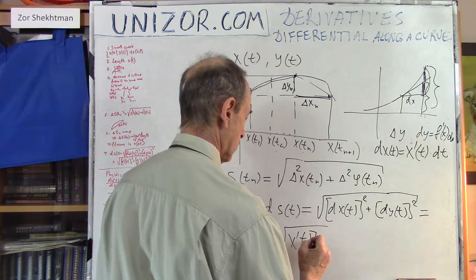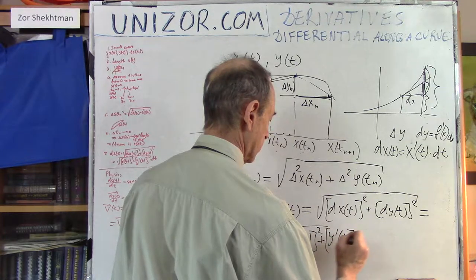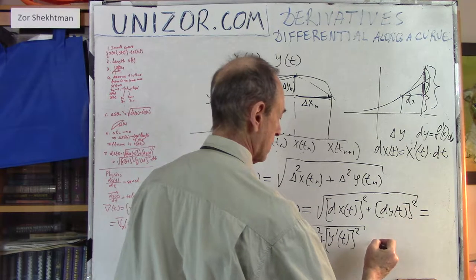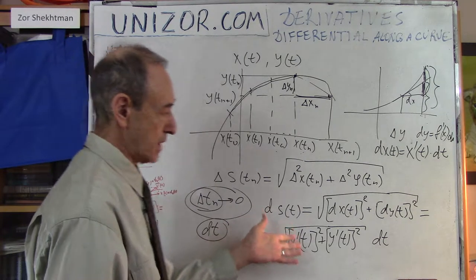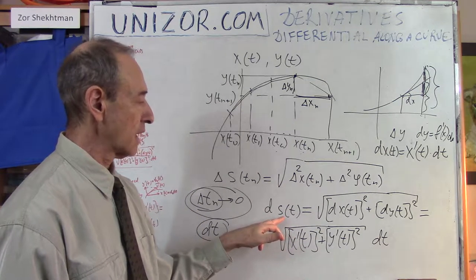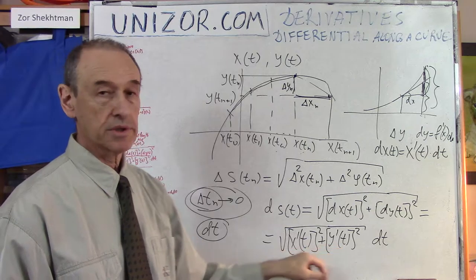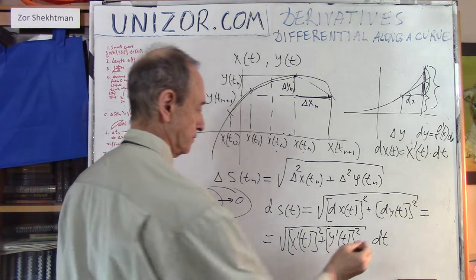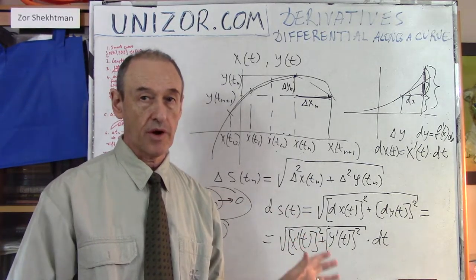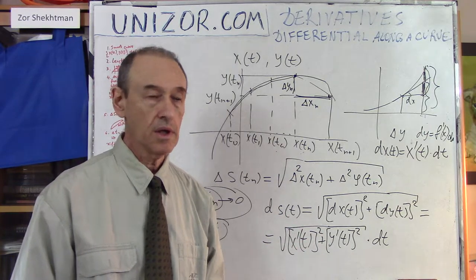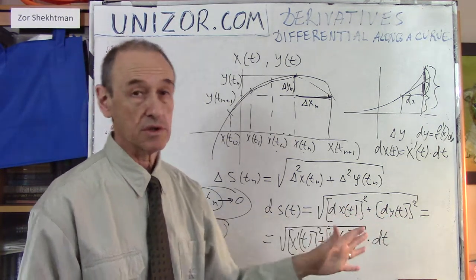So this is basically another representation of the differential along the curve for a curve given as a parametric pair with parameter t. Basically, this is it about the differential along the curve — this is my final formula. It's obvious because the Pythagorean Theorem is a simple thing, and this is just a plain consequence from the definition of differentials.